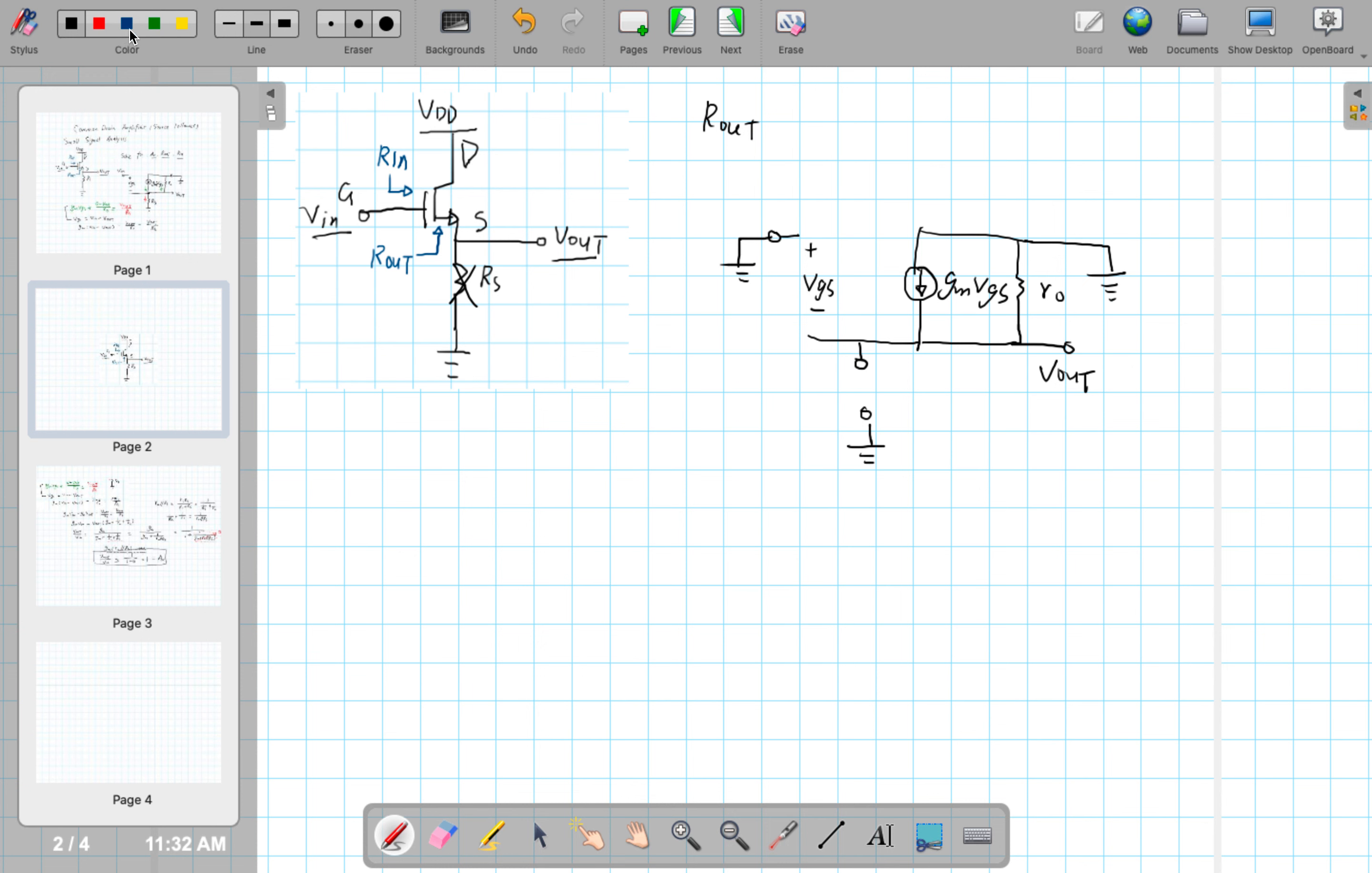So here what we do is that we apply the technique of adding a test source. Let's call it V-sub-X. The test source is responsible for a current generated here. Let's call it I-sub-X. So the Rout is really. So in order to solve for Rout, we just need to find the ratio between VX and IX.